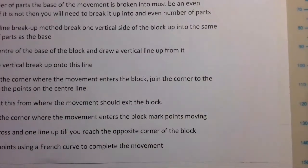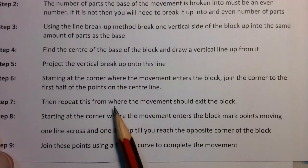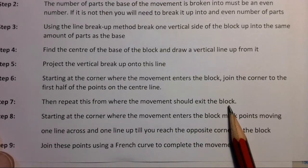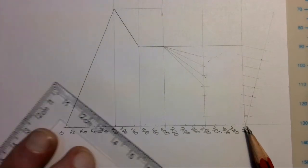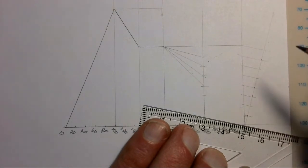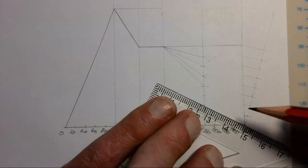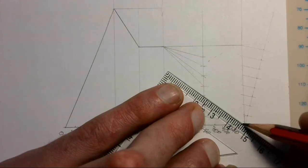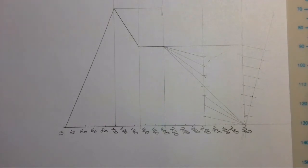Step seven: repeat this from where the movement should exit the block — doing the same thing from where the motion ends. We join that exit corner to the center line on the first part, second part, third part, and fourth part. Your construction should look like that.